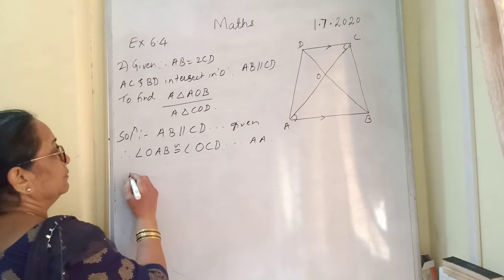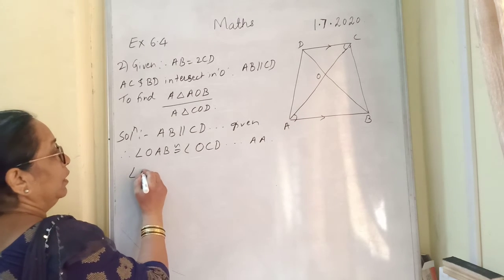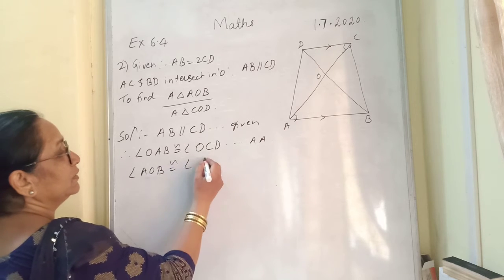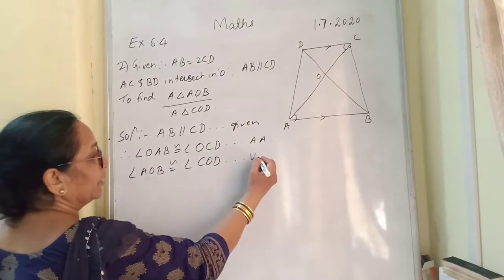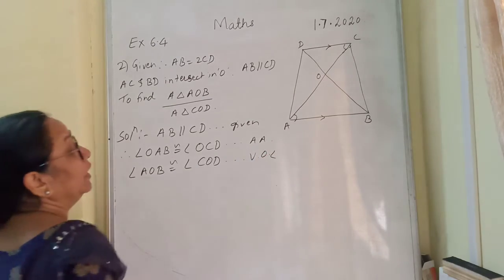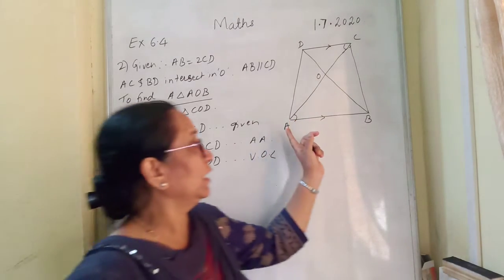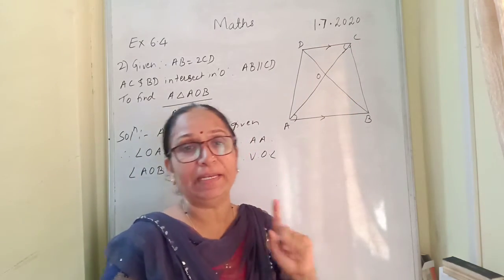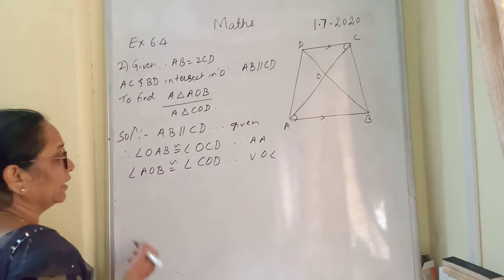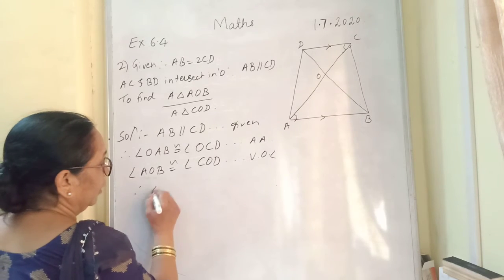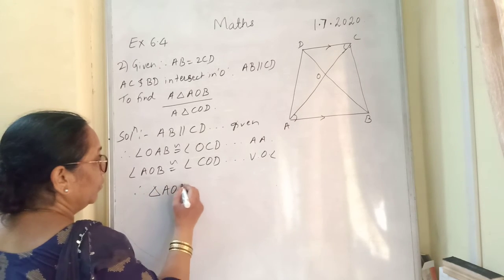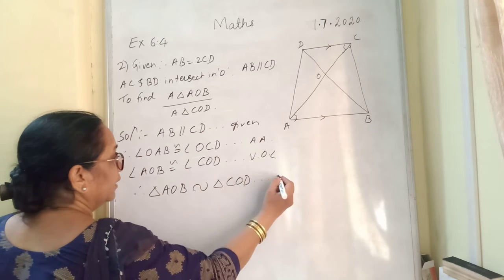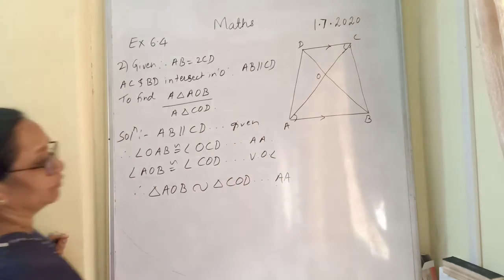Angle AOB is congruent with angle COD. This will be vertically opposite angles. Now, if anyone wants to consider ABO is congruent with CDO, that is also valid. Any two angles you can take. Therefore, triangle AOB is similar with triangle COD, and reason will be AA test of similarity.